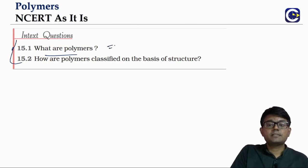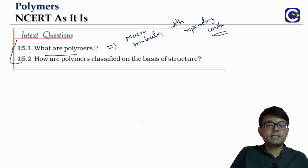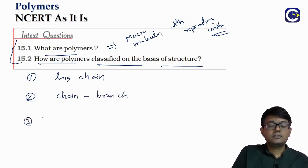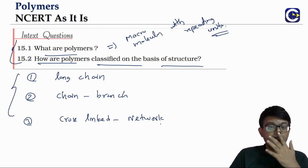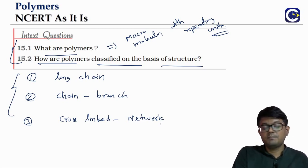Summary of polymer classification: Polymers are macromolecules with repeating units. Based on structure, we have: linear (long chain), branched, and cross-linked or network polymers. We have seen examples for each. For every classification criterion, remembering the examples is very important — past year JEE and NEET papers frequently test these.